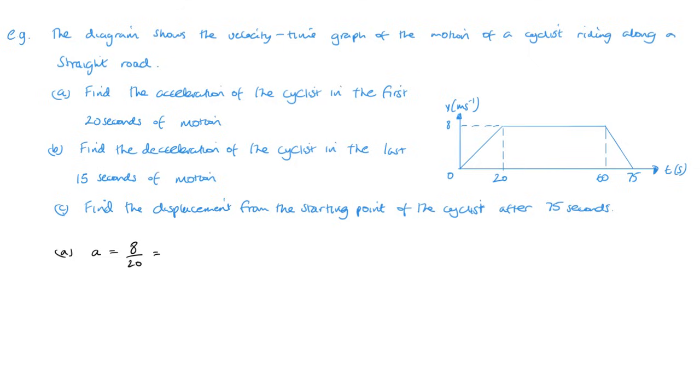Over the change in x, which is 20. So just in the calculator, 8 divided by 20 is 0.4, so that's meters per second squared.